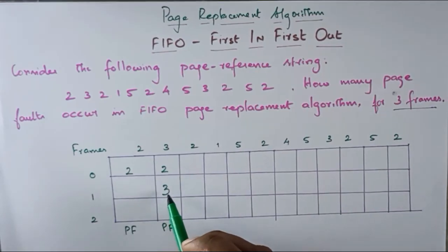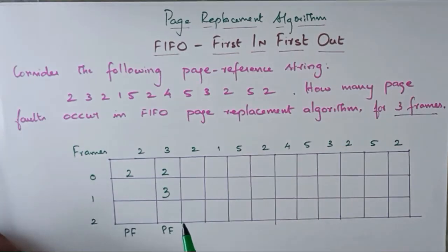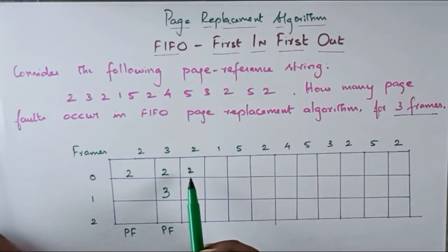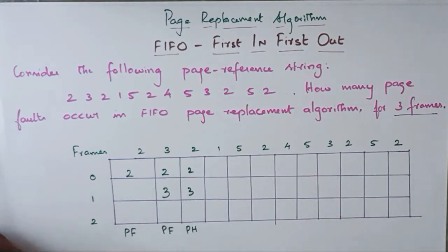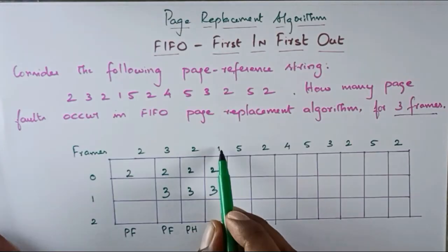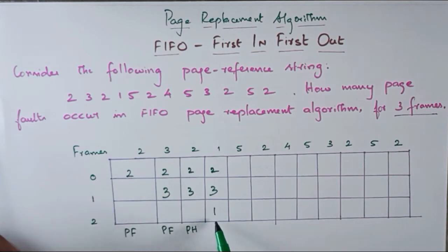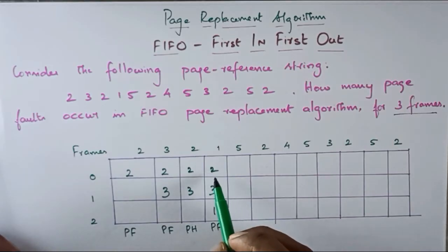3 is available, so I am going to fill it. First thing is 2 and 3. Next, what do we need? 2 is available — 2 is already there, so it will be a page hit. If we have a page, we will use the page replacement. The next one is 1. Place the 1 — the blank is filled with 1. The page is not 1, that is the page fault. Now we have 2, 3, 1.